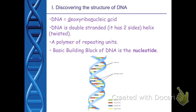Just like proteins are macromolecules made out of amino acids, or lipids are made out of a fatty acid chain and a head, and carbohydrates are made out of saccharides — the basic building block of DNA is called a nucleotide. The nucleotide is the monomer, and the polymer is the nucleic acid.